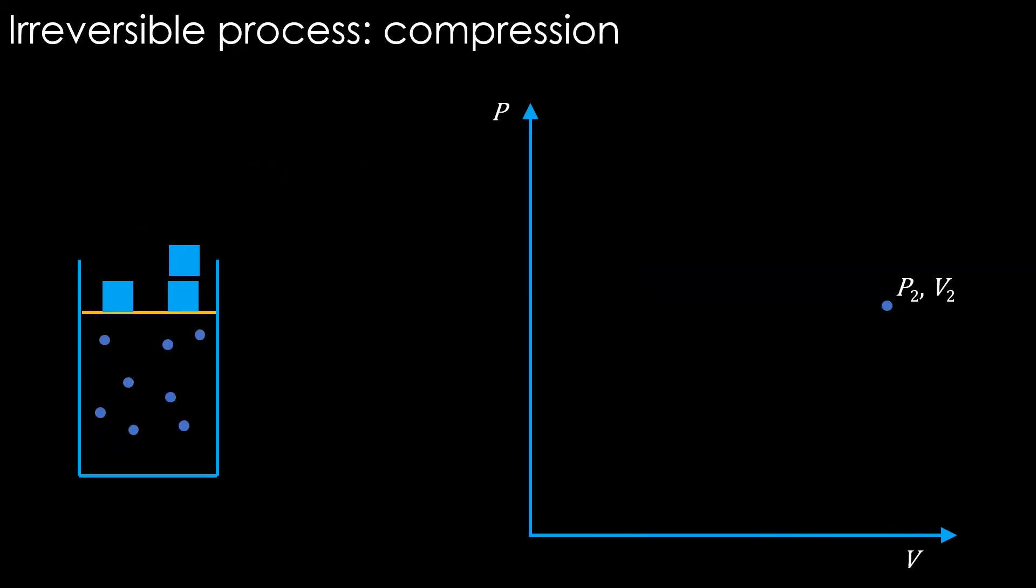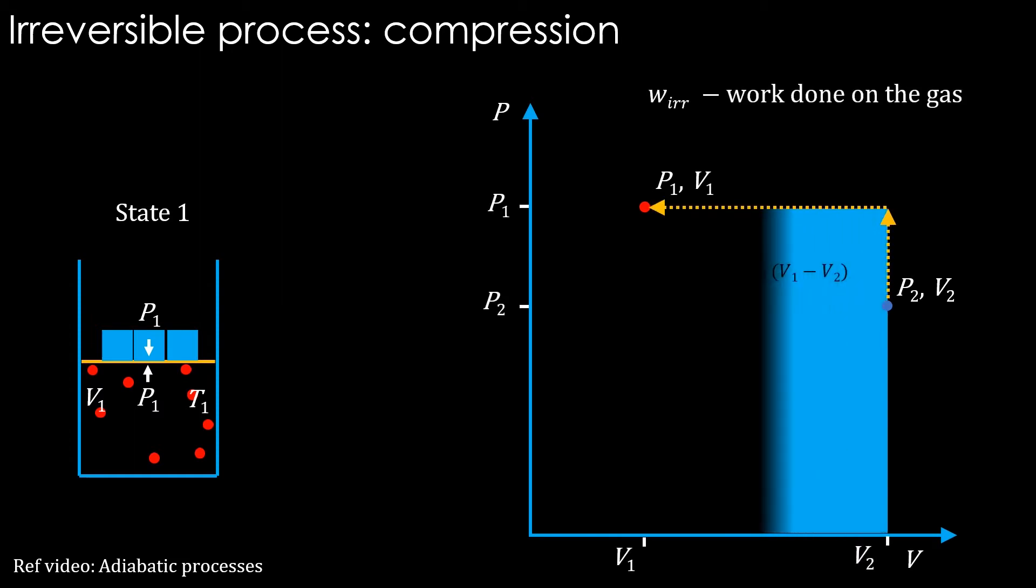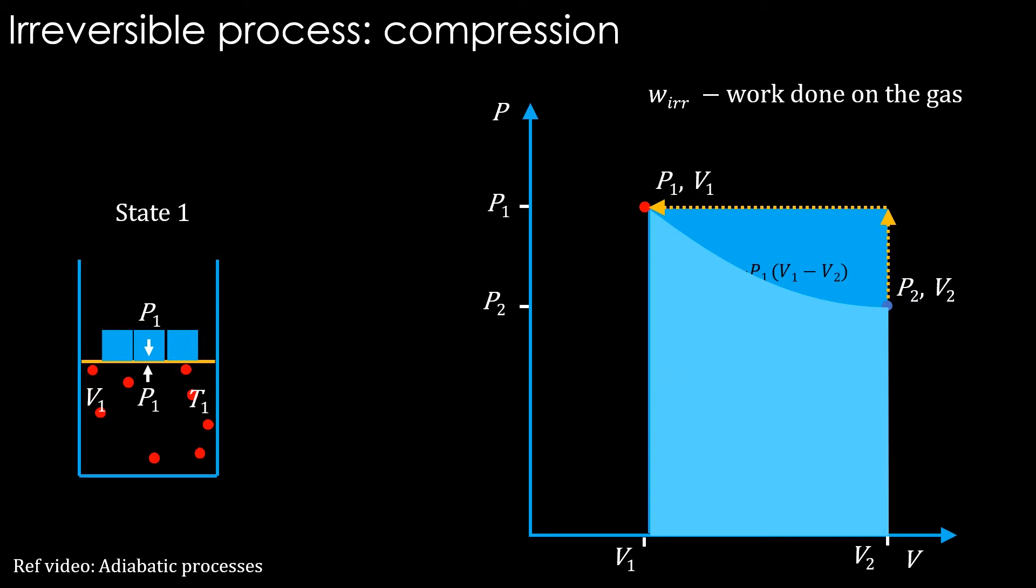Let's see the irreversible compression. Keep the chunk of the mass back on the piston. State one is reached. This is not entirely true, which you will realize after watching the video on adiabatic processes. For simplicity, let's say it reaches state one. This is the path. Work done on the gas is equal to a much bigger area, meaning work done is higher than that in the reversible case. Note that it is work done on the gas. What it means is that we have to spend more work to compress the gas in the irreversible case compared to the reversible case.